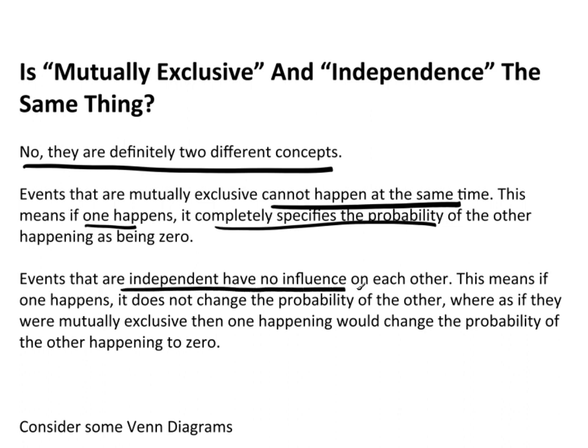Now, events that are independent have no influence on each other. This means if one happens, it does not change the probability of the other. Whereas if they're mutually exclusive, then one happening would change the probability. So if two events are independent, then they're going to end up sharing something. Whereas if they're mutually exclusive, they won't share anything.